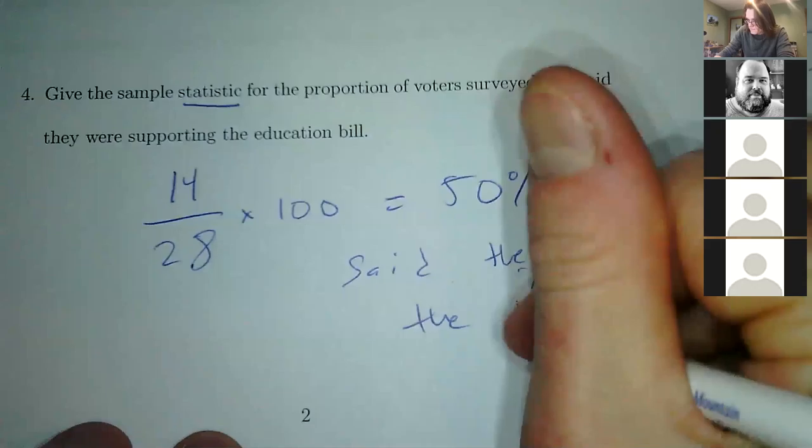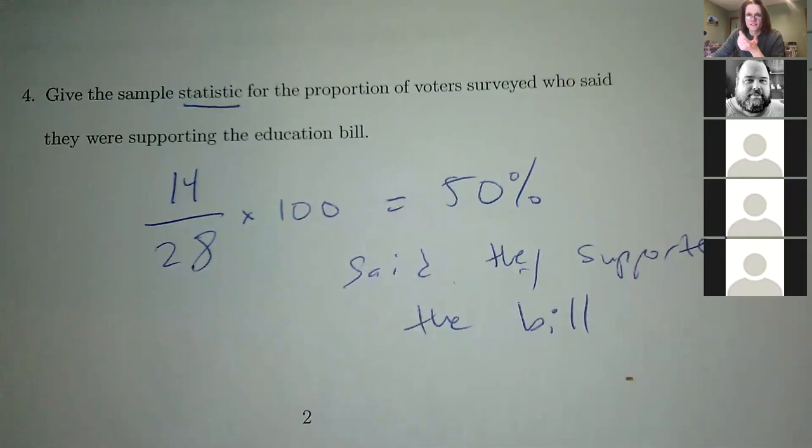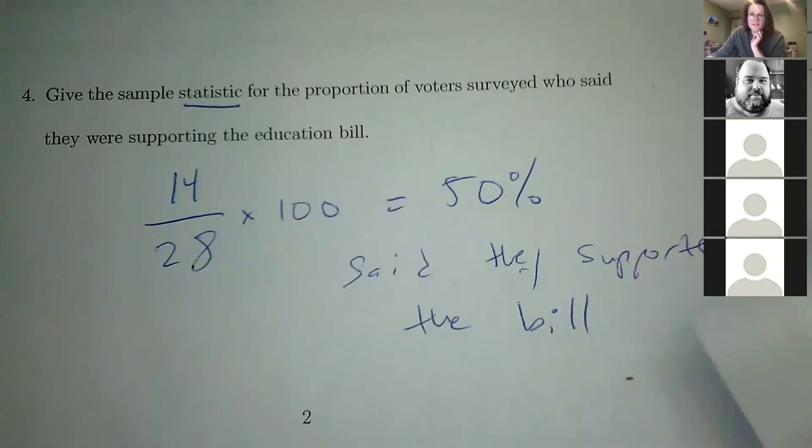How is it 50% though? The supporting is bigger — 14 is bigger than 12. Oh, it's because two are undecided. Yeah, two are undecided, so I don't know what that counts as. You can interpret that differently. But 50% said they supported it.